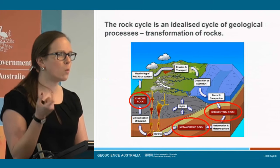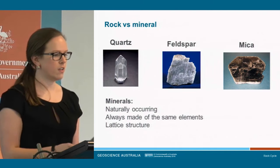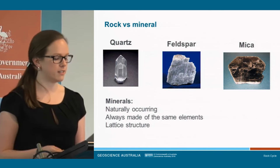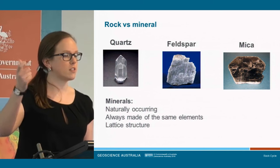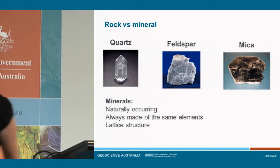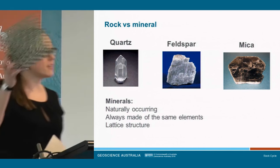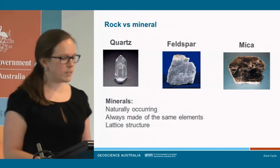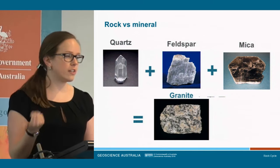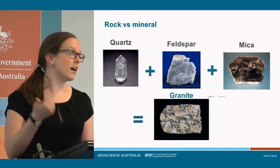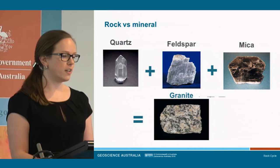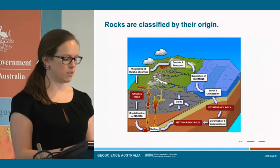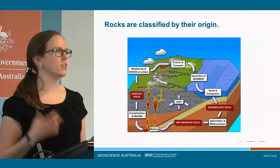Before I get too much into that, I'm just going to step back and define what we mean when we say a mineral and a rock. A mineral is a naturally occurring substance with a fixed chemical composition — it's really always made of the same stuff — and all the individual atoms arrange themselves in a very rigid lattice-like structure. When we talk about rocks, it's also a solid naturally occurring substance, but it's an aggregate of one or more minerals. For example, granite is actually made up of several different minerals together. Coming back to the rock cycle, the types of rocks are really classified by their origin — the geological processes that form them.